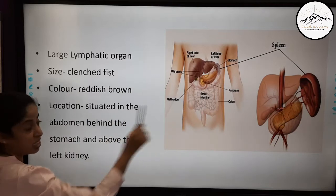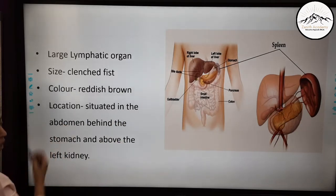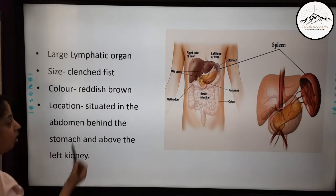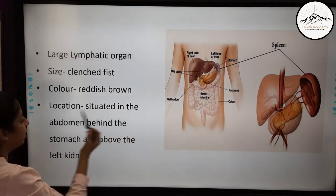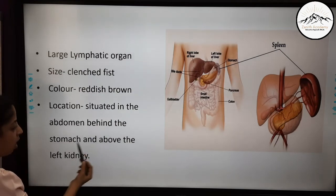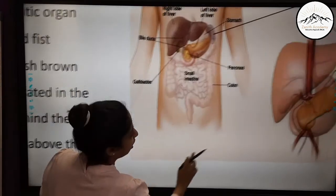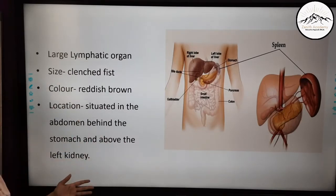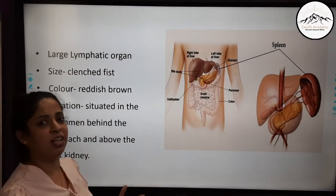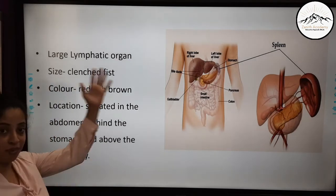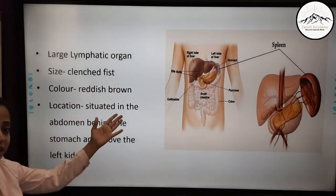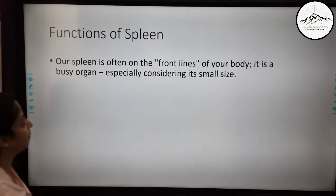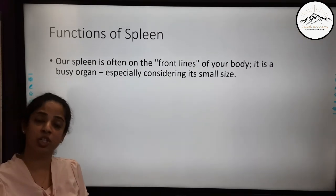The size of the spleen is about the size of a clenched fist. The color is reddish brown, as you can see from the diagram. The location: it is situated in the abdomen, behind the stomach and above the left kidney. You have to be very specific and clear when writing the location. Now we know that spleen has nothing to do with anger — it is a lymphatic organ, reddish brown in color, situated in the abdomen behind the stomach and above the kidney. Now let us study the functions of spleen.